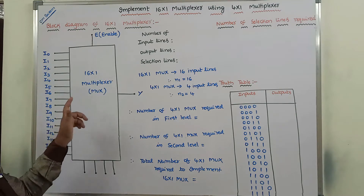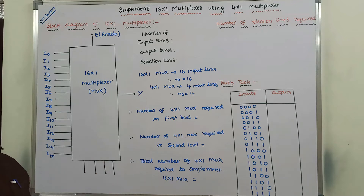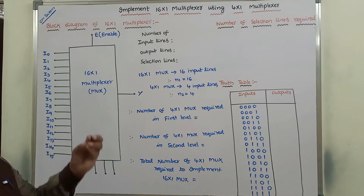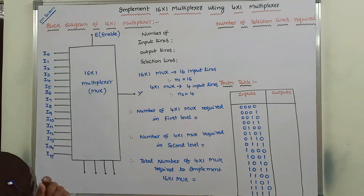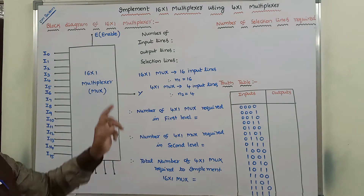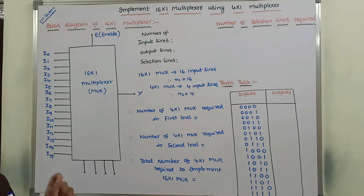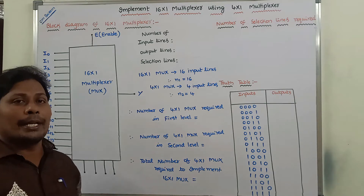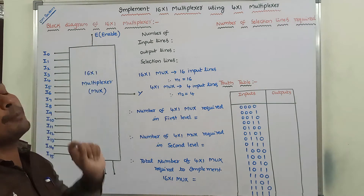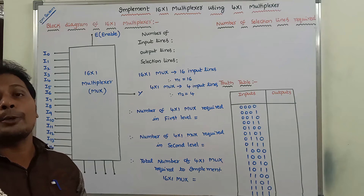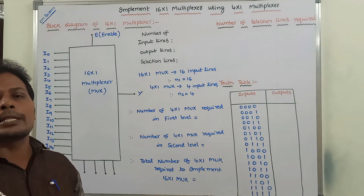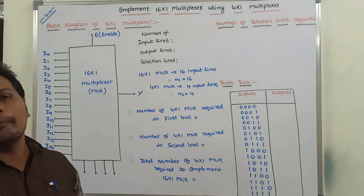The selected input is sent as the output. This operation is performed when the enable input E is equal to 1. When the enable input E is equal to 0, the multiplexer does not perform its operation. Hence, the enable input is called the control input of the 16 by 1 multiplexer.